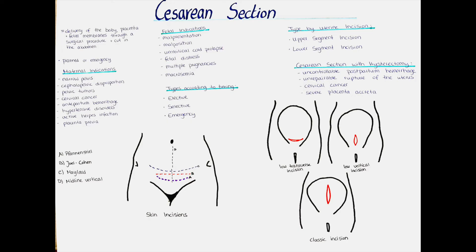Another way to classify cesarean section is by the type of uterine incision. We can differentiate between upper segment and lower segment uterine incisions. The classic type is the upper segment uterine incision — a vertical incision in the upper part of the uterus. It is indicated in an impacted shoulder presentation, dense adhesions of the uterus such as a myoma in the lower uterus, cervical cancer, or if rapid delivery is indicated. It can also be done if the woman requests a tubal ligation at the same time. It is usually associated with less blood loss due to less vascularity, is easier to repair, has fewer adhesions to the bowel and omentum, and there is a smaller chance of developing peritonitis after surgery.